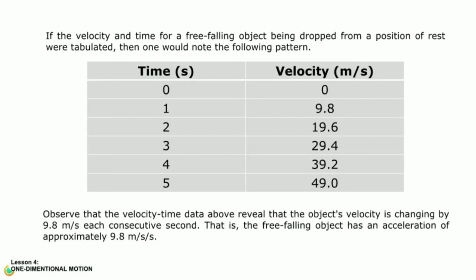If the velocity and time for a free falling object being dropped from a position of rest were tabulated, then one would note the following pattern. At time 0, the velocity is 0. At time 1 second, the velocity is 9.8 meters per second. At time 2 seconds, the velocity is 19.6 meters per second.